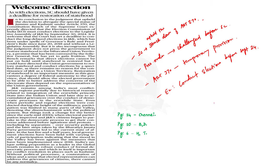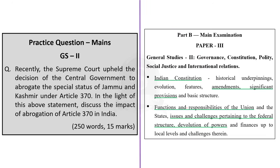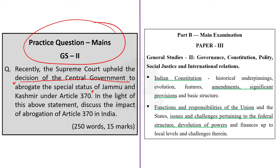The author of the article says that the Supreme Court should have given a deadline for the restoration of statehood along with the deadline for elections, as restoration of statehood is important to guarantee a degree of federal autonomy to J&K and help the elected government better address the concerns of the electorate. In our discussion, let us understand the advantages and disadvantages of the abrogation of Article 370 using our usual mains answer-writing approach. The question is: recently the Supreme Court upheld the decision of the central government to abrogate the special status of J&K under Article 370 — in light of this, discuss the impact of abrogation of Article 370 in India. This is a 15-marker, 250-word question.